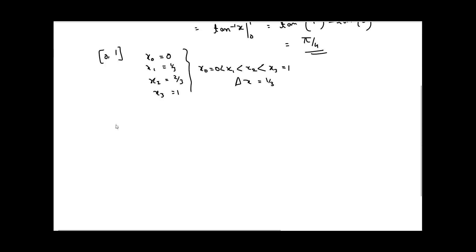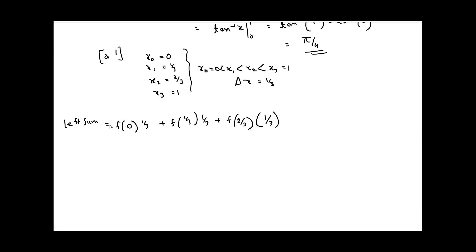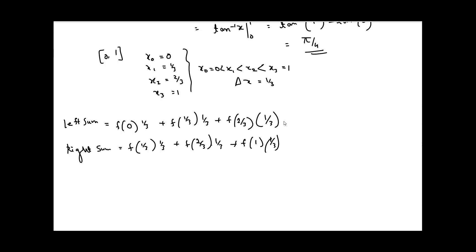If I write the left sum it will give me f(0) times 1/3 plus f(1/3) times 1/3 plus f(2/3) times 1/3. For the right sum it will give f(1/3) times 1/3 plus f(2/3) times 1/3 plus f(1) times 1/3.